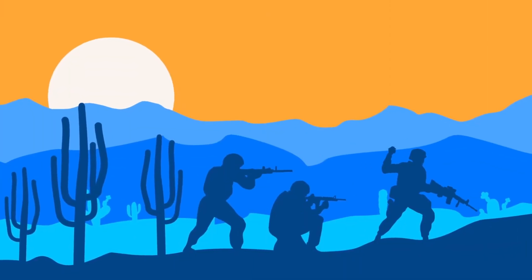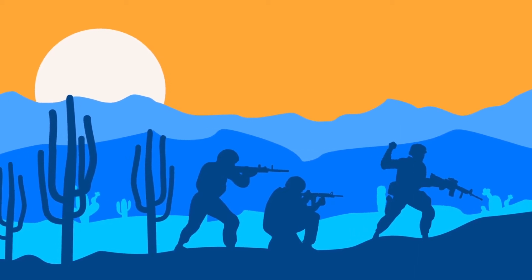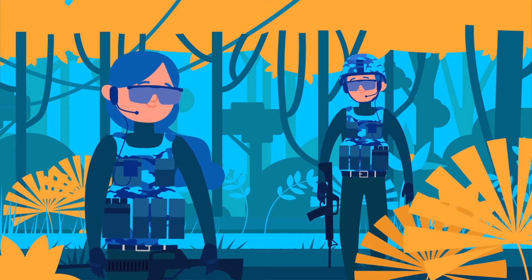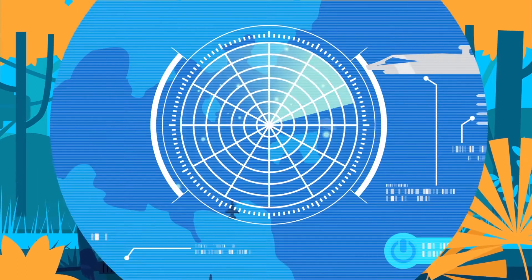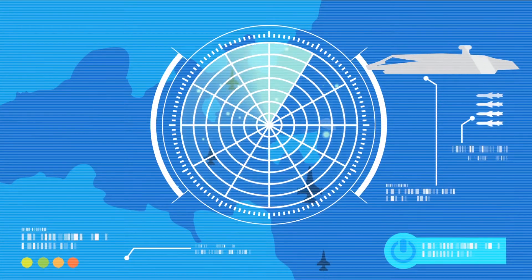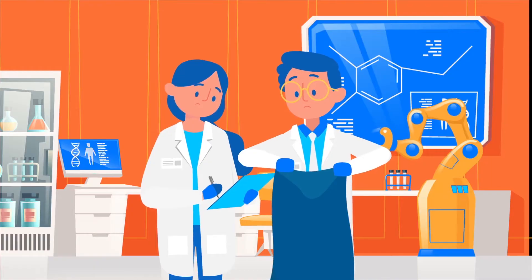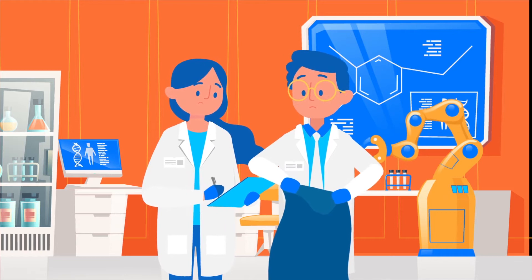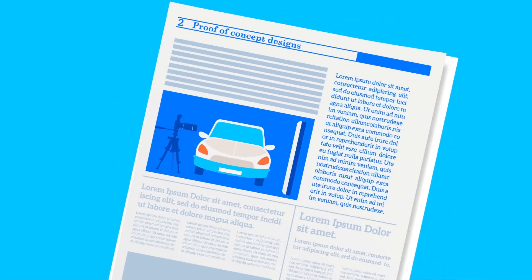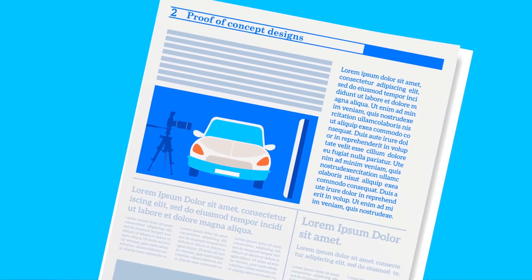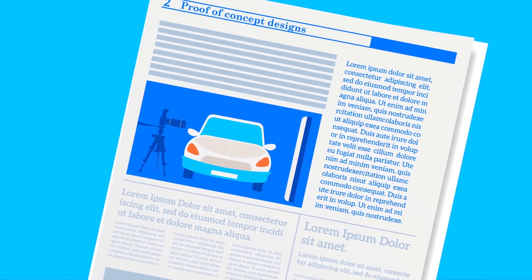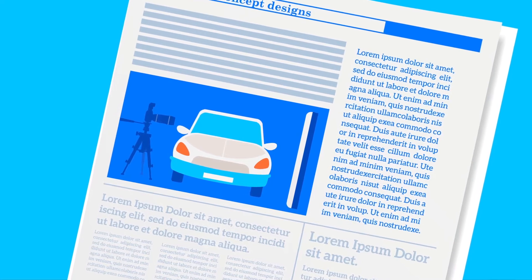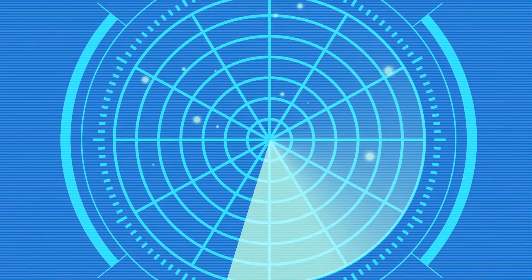There are obvious benefits to the development of cloaking technology, especially for military applications. For centuries, soldiers have worn uniforms that help them blend into the background, and stealth jets have been designed to evade detection by radar. But as far as we know, creating a true cloak of invisibility has eluded researchers until now. Proof-of-concept designs have occasionally made the headlines, such as cars fitted with LED screens on one side and cameras on the other. These may trick an observer from one specific angle but fail to work in real-world scenarios.